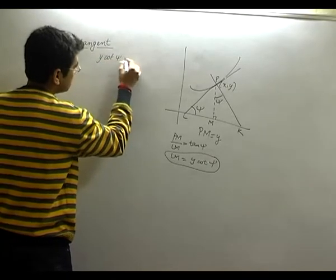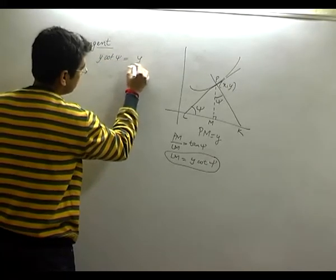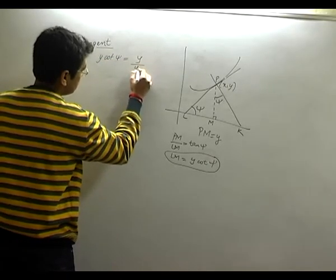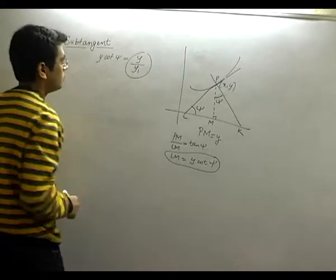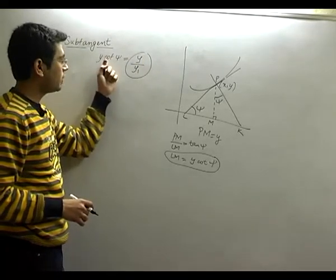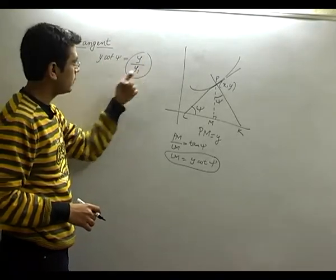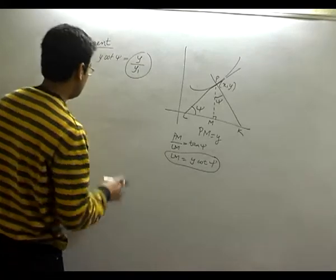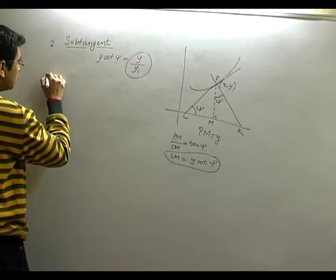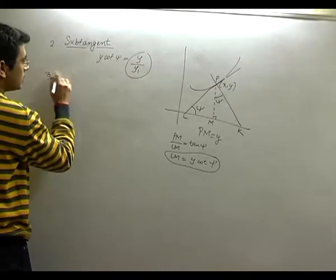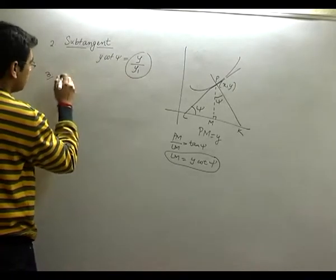LM we already found: that is y cot psi. Now I need to change this — it becomes y upon y1. Because y cot psi equals y upon tan psi, and tan psi is y1. And as I said, every answer I need in the form of y1.